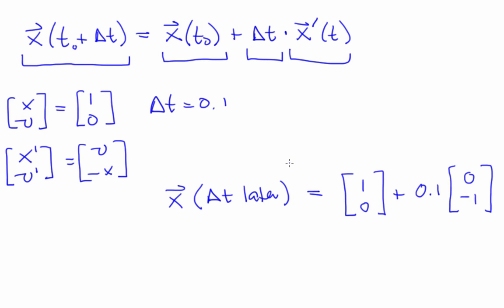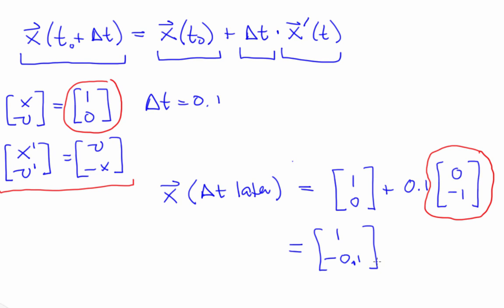This vector right here, I got by plugging this vector into this equation. So the final result here is, and that's exactly what we would expect for the simple harmonic oscillator. Remember the tangent vector here points straight down and forward Euler walks a little bit out along that vector.